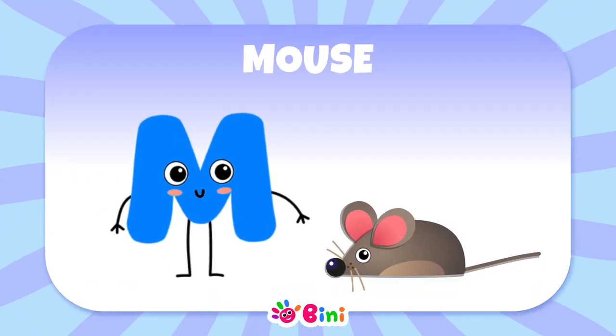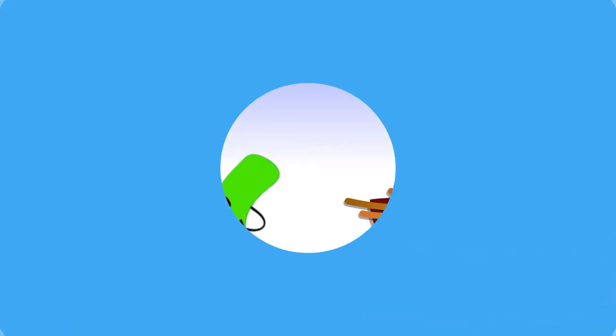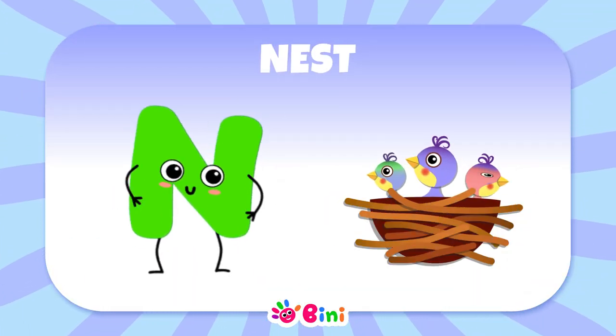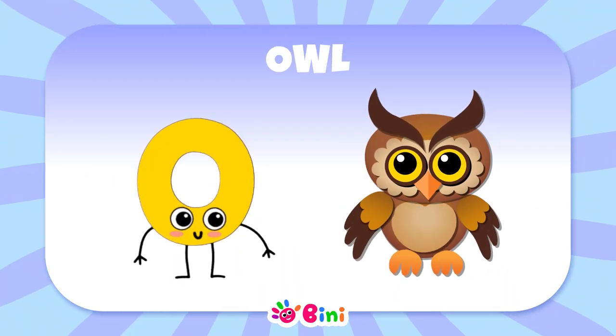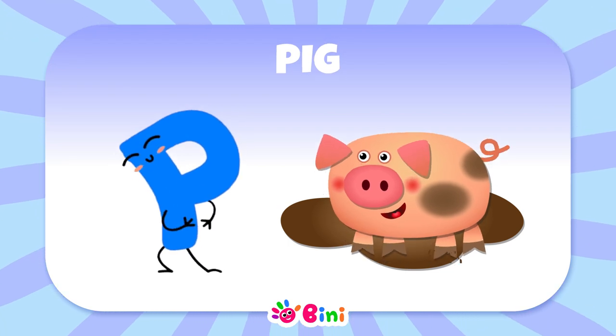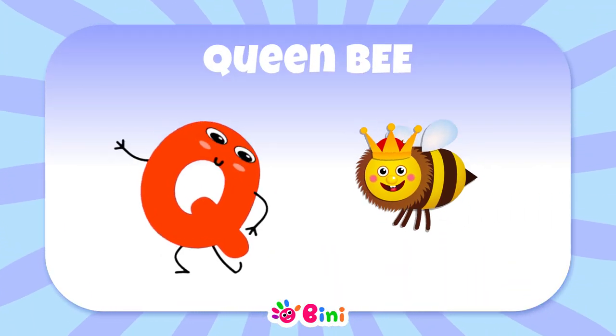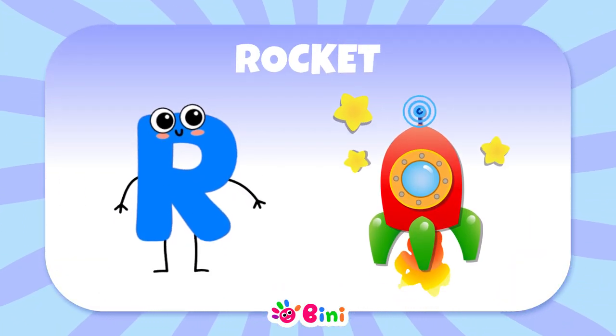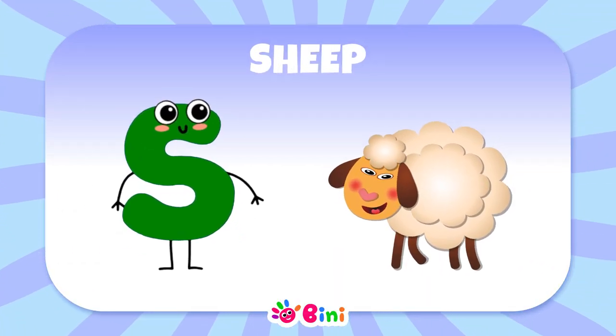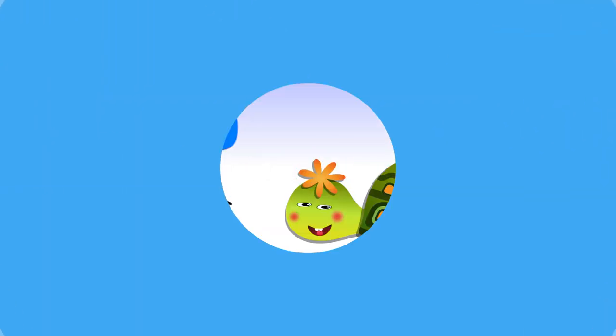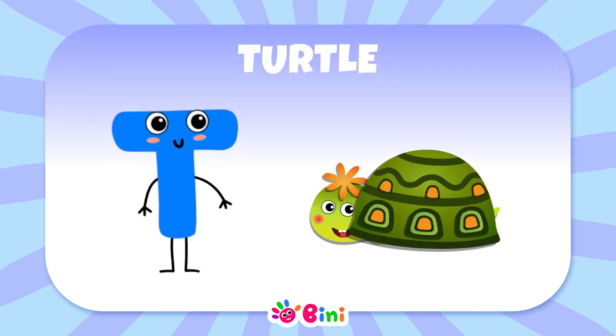The word nest begins with the letter N. The word owl begins with the letter O. The word pig begins with the letter P. The word queen bee begins with the letter Q. The word rocket begins with the letter R. The word sheep begins with the letter S. The word turtle begins with the letter T.